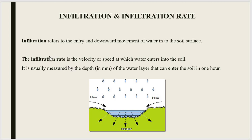Infiltration rate is the velocity or speed at which water enters into the soil. It is measured by checking how much water has entered into the soil layers in one hour, and the unit of it is mm per hour.